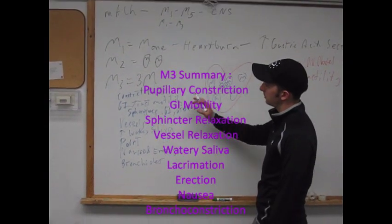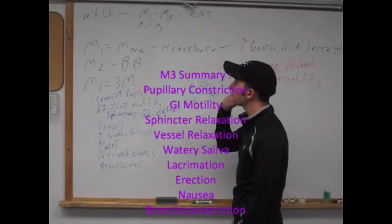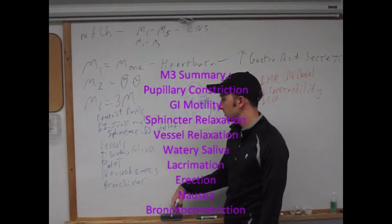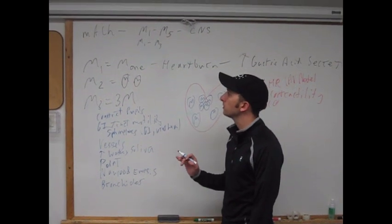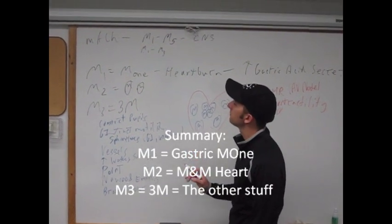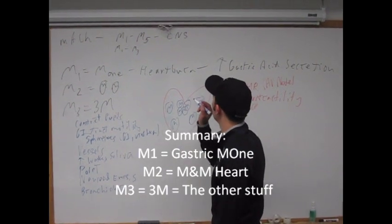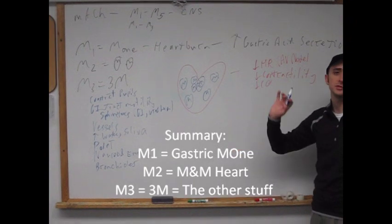So M3, it will actually constrict your pupils, increase motility GI, relax your sphincters, relax your vessels, increase watery saliva, point of point-and-shoot, emesis and bronchial constriction. So that is your muscarinics. Muscarinic parasympathetic: M1 heartburn, moan, gastric acid secretion; M2, M&Ms; M3, pretty much everything else.